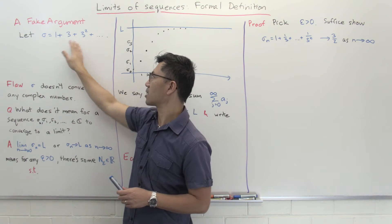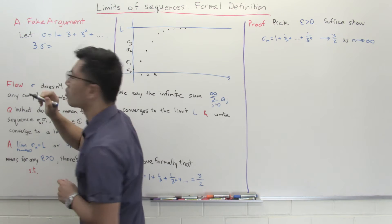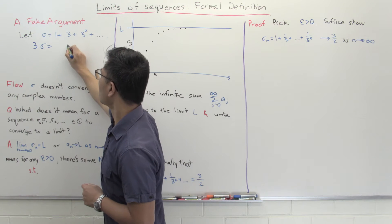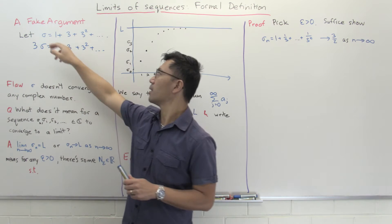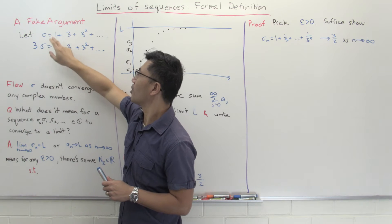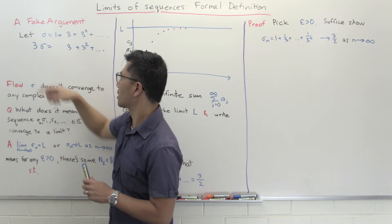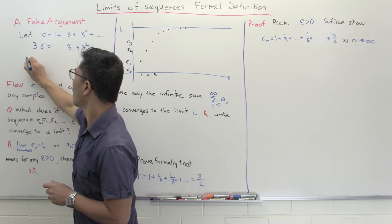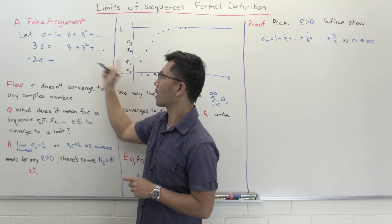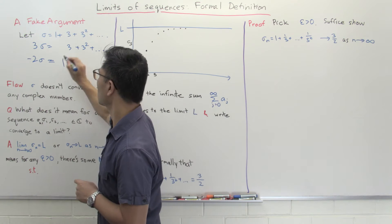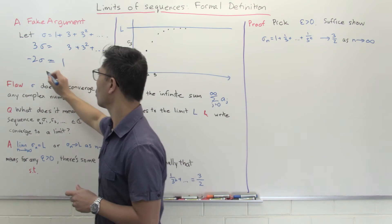Suppose you write this expression and call it Sigma, then multiply it by 3. So 3·Sigma gives 3 plus 3 squared plus 3 cubed and so on. Now I'm going to subtract this second expression from the first. That gives Sigma minus 3·Sigma, which is minus 2·Sigma. All the later terms cancel, leaving just 1.